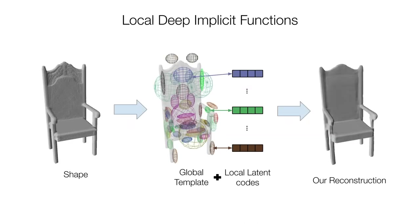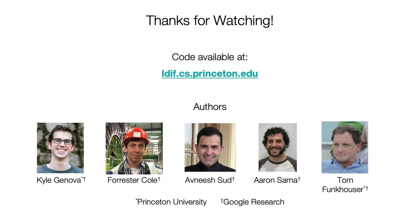To summarize, we have introduced LDIF, a new 3D shape representation. Its key novelty is that it localizes learned implicit surface functions in space. This enables it to capture local detail with fewer decoder parameters and without any part-level or correspondence supervision. Please visit our website for code and more information.